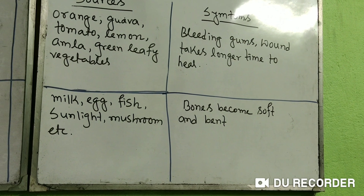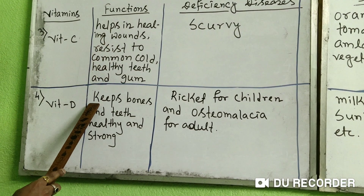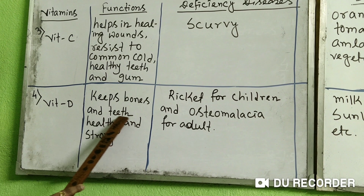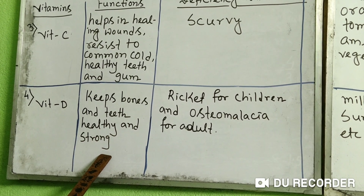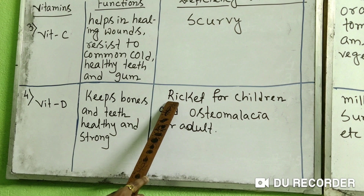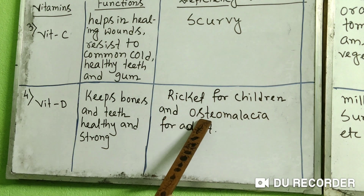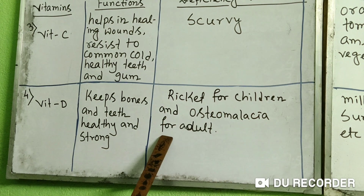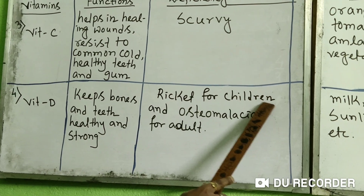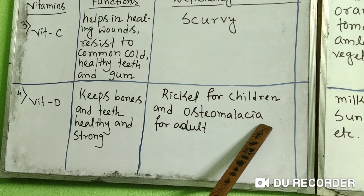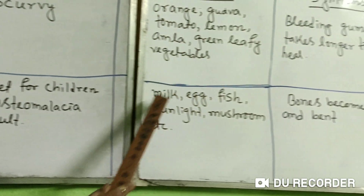Our fourth vitamin is Vitamin D. Its functions are keeping bones and teeth healthy and strong. The deficiency diseases are rickets for children and osteomalacia for adults.